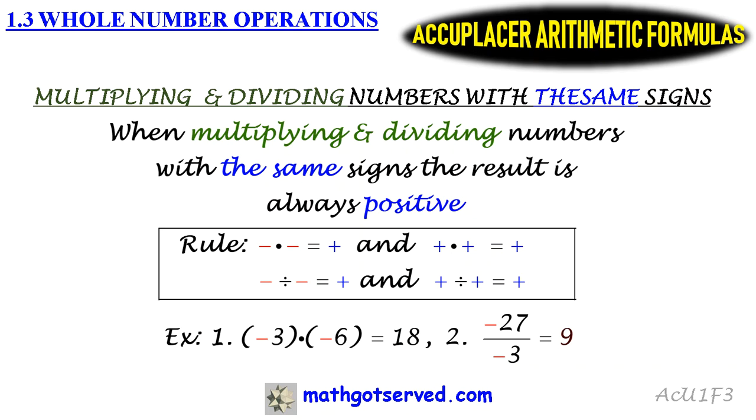The title of this formula is multiplying and dividing numbers with the same signs. The rule is as follows: whenever you are multiplying and dividing numbers with the same signs, the result—either the product for multiplication or the quotient for division—will always be positive.